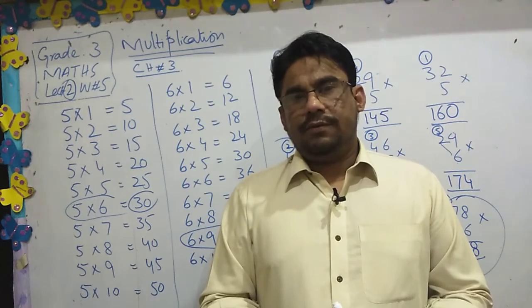5 here, 2 carry here. 5 times 2 equals 10. When we add 2, it's 12. Answer, what is it? 125, here we go.